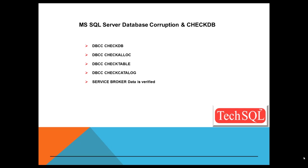DBCC CheckCatalog performs more than 50 cross-checks between various metadata tables, and cannot fix errors it finds by running the DBCC operation with any of the repair options. Service broker data is also verified; there is no specific DBCC command to perform these checks, so CheckDB is the only way to check service broker data. DBCC CheckFileGroup can be considered a subset of CheckDB because it performs DBCC CheckTable on all tables and views in a specified file group.